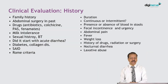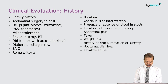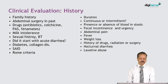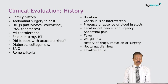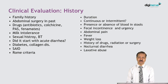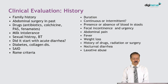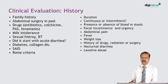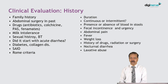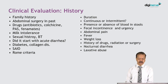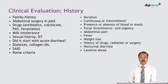Important history points in a patient with chronic diarrhea include: family history, since celiac disease and Crohn's disease run in families; abdominal surgery, as blind loop syndrome or surgical anastomosis can cause small intestinal bacterial overgrowth; and history of drugs — several antibiotics, colchicine, para-aminosalicylic acid, and phenolphthalein can cause chronic diarrhea.